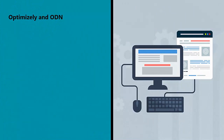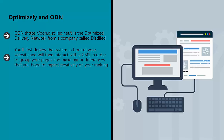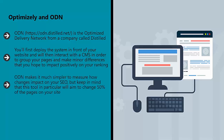Optimizely and ODN. ODN (https://odn.distilled.net) is the optimized delivery network from a company called Distilled. This is a tool that allows you to much more easily utilize split testing for your site by grouping different versions of web pages. You'll first deploy the system in front of your website and will then interact with a CMS in order to group your pages and make minor differences that you hope will impact positively on your ranking. ODN makes it much simpler to measure how changes impact on your SEO, but keep in mind that this tool in particular will aim to change 50% of the pages on your site — as we've discussed previously, this might actually be a little more than is optimal for most applications.